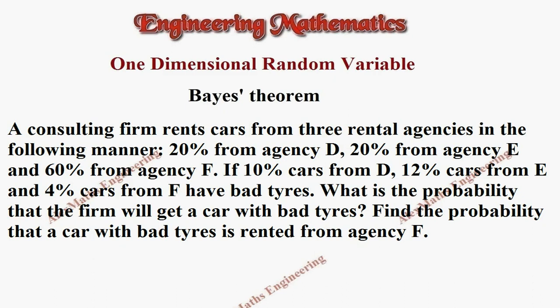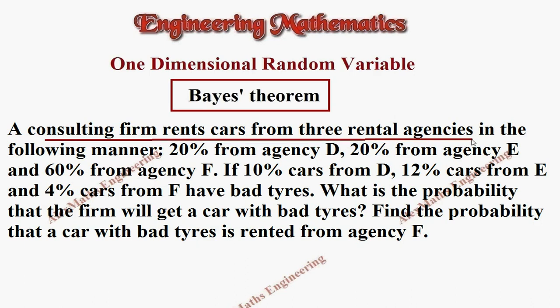Hi students, this is Alex. In this video we are going to solve a problem for Bayes' theorem. The question: A consulting firm rents cars from three rental agencies in the following manner: 20% is from agency D.